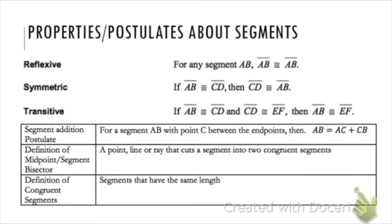Before we get into proofs about line segments and angles, let's do a quick review about properties and postulates that you need to know — do flashcards, whatever you need. We talked about reflexive, symmetric, and transitive properties when we were doing algebraic proofs, and those properties also hold true for line segments.